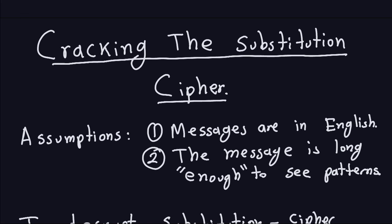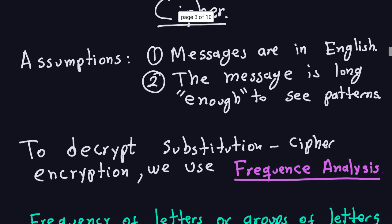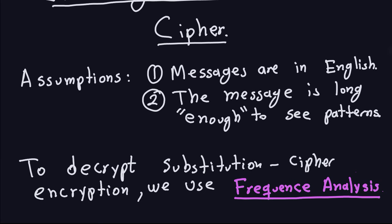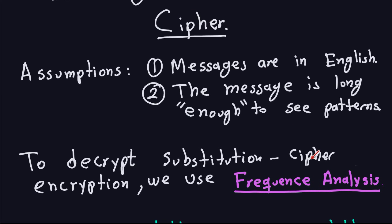When the message is not long enough, the cracking of the message might not be exact, meaning you may have many possible interpretations of the ciphertext. To decrypt a substitution cipher, we don't use the same approach as the Caesar cipher. The Caesar cipher used a brute force attack — trying all possibilities — but as you saw in the previous video, that's not an option for the substitution cipher. Instead, we use something called frequency analysis.